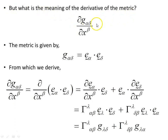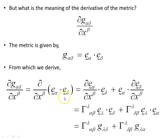Now let's look at the meaning of the derivative of the metric. The metric is given by the scalar product — the dot product — of each pair of basis vectors; it's a rank-2 tensor. The partial derivative of the metric tensor is the partial derivative of this scalar product. Expanding using the product rule gives: the partial derivative of the first basis vector dotted with the second, plus the first basis vector dotted with the partial derivative of the second.